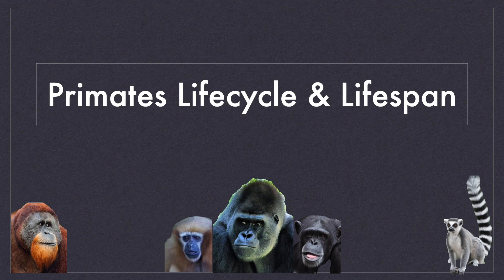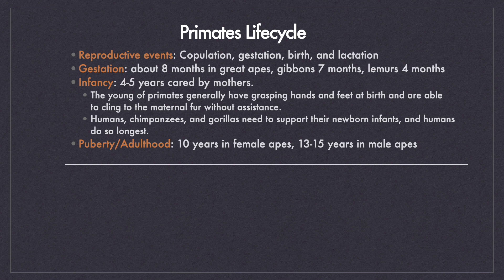Let's talk about the life cycle and lifespan of primates. Primates have four life cycle events: copulation, gestation, birth, and lactation. The period of gestation is about 8 months in the great apes. For gibbons it is 7 months and lemurs have a short gestation period of 4 months. During the infancy of their lives, the young ones are cared for by mothers for 4 to 5 years. The young use their grasping hands and feet to cling to the maternal fur without any assistance. Humans, chimpanzees, and gorillas need to support their newborns, and for humans the period of infant care is the longest.